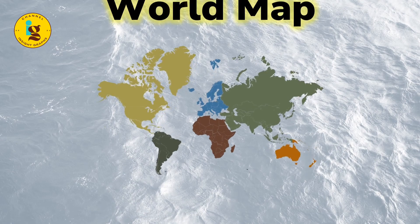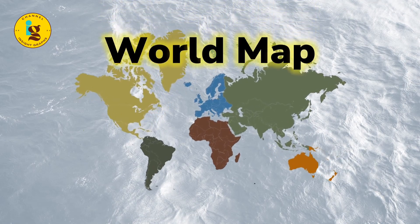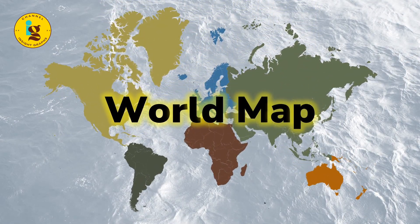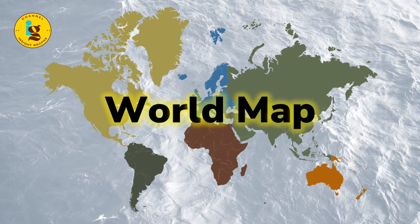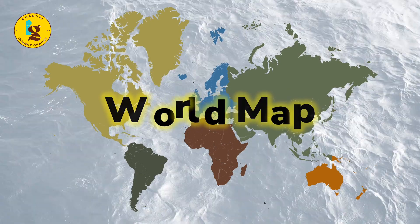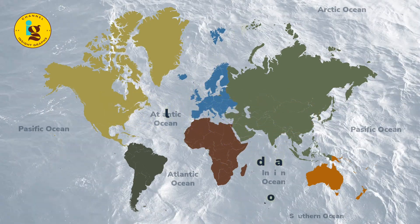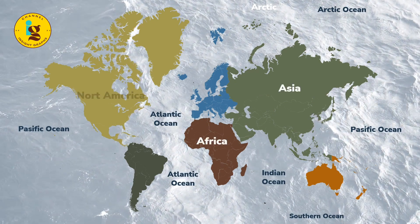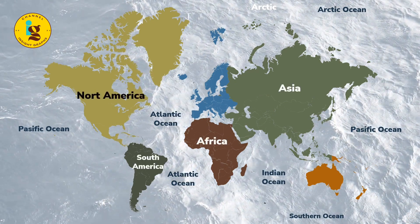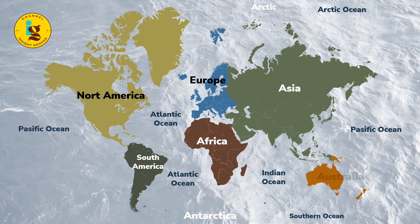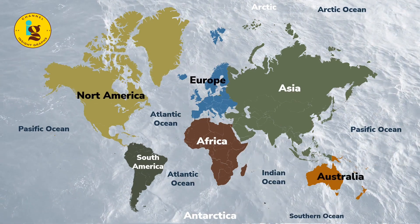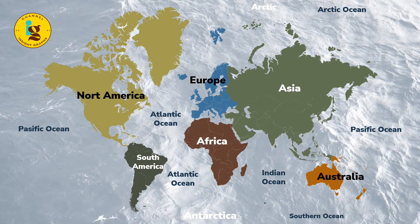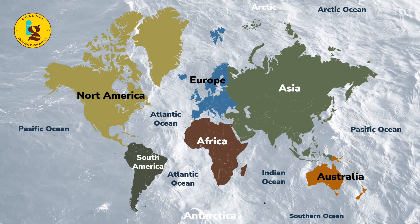The world map is a representation of the earth's surface and it is divided into different regions and continents based on geographical location. There are seven continents in the world: Asia, Africa, North America, South America, Antarctica, Europe, and Australia. Each continent has its own unique characteristics including its size, shape, and natural features.